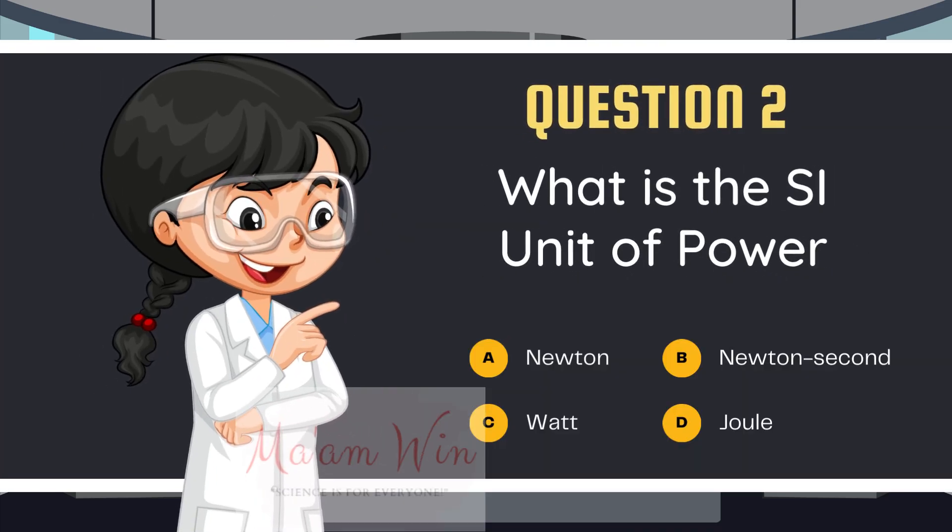Question number 2. What is the SI unit of power? Letter A, newton. Letter B, newton second. Letter C, watt. Letter D, joule.